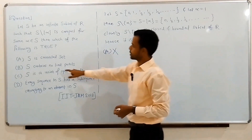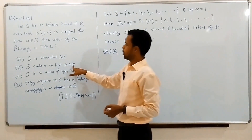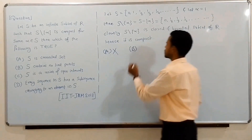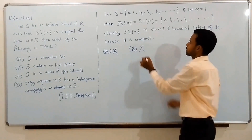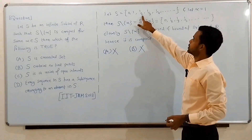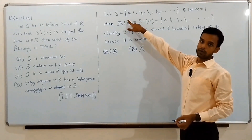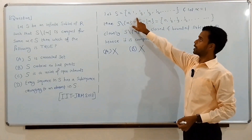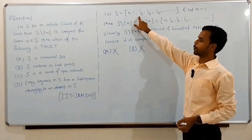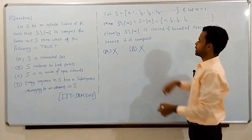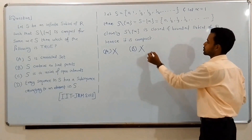Option B states that S contains no limit points, which is also wrong, because 0 is the only limit point of S and it belongs to S. So S does contain a limit point, and option B is wrong.